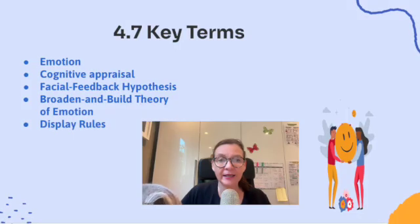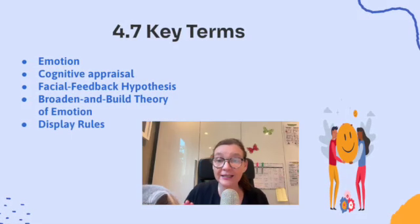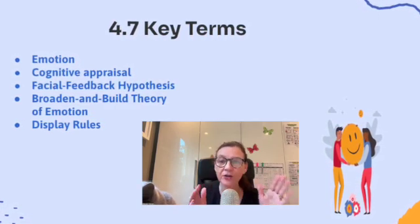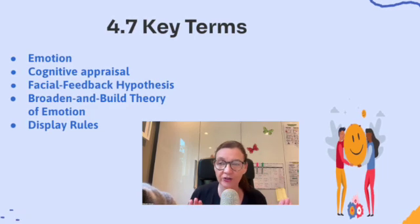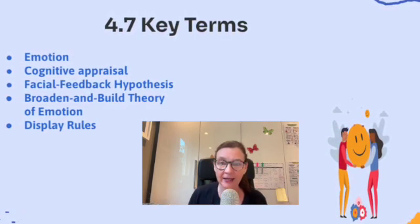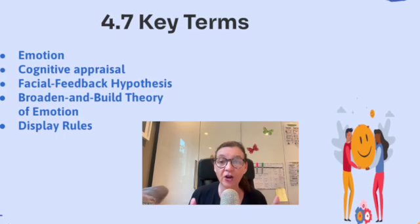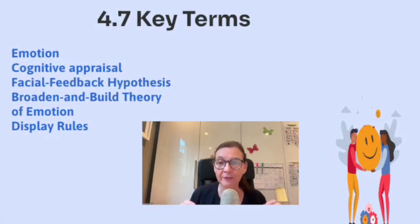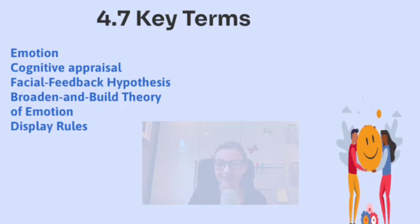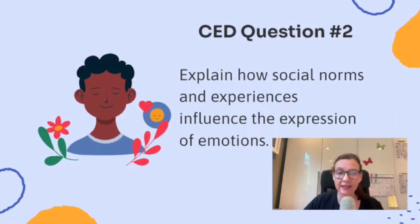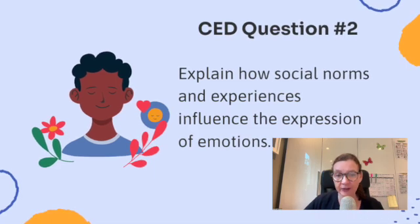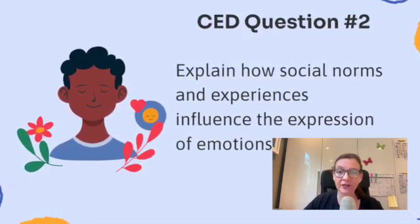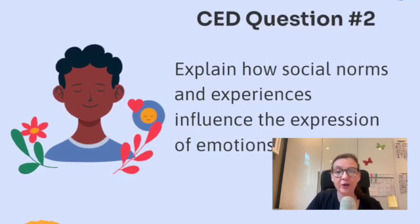On this slide, you're going to see the key terms for 4.7. This is for the entire 4.7, not just the second CED question. And as always, I do a separate video with just the key terms, examples, and definition for each of the key terms you're going to need to know. Remember that key to the five is knowing those key terms and being able to apply them on test day. The second CED question is: explain how social norms and experiences influence the expression of emotions.